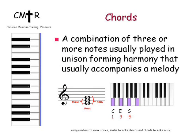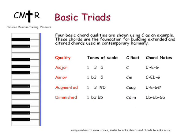Scales are important to know in order to be able to construct chords. Three or more notes played together form a basic chord, and that is called a triad. There are four basic types of triads: major, minor, augmented, and diminished. These form the building blocks for constructing the advanced chords that will be covered in the next section.